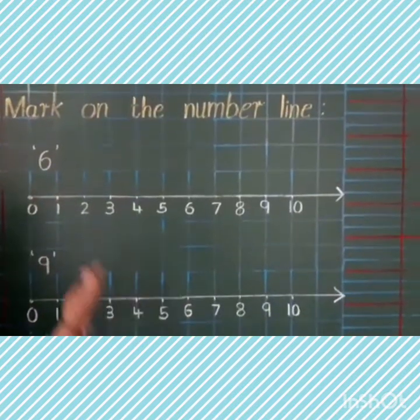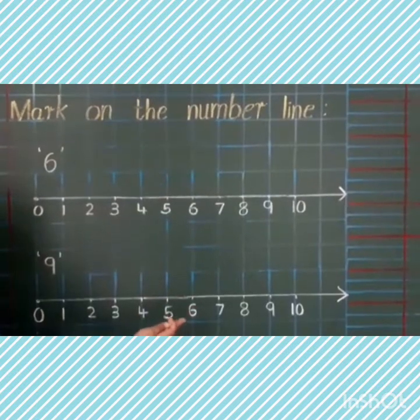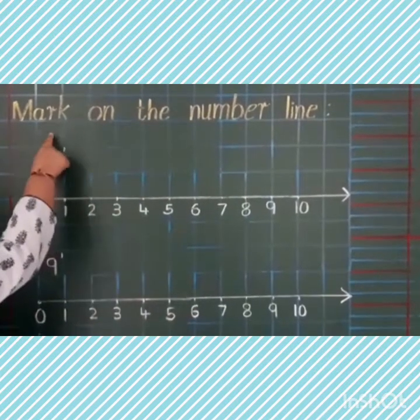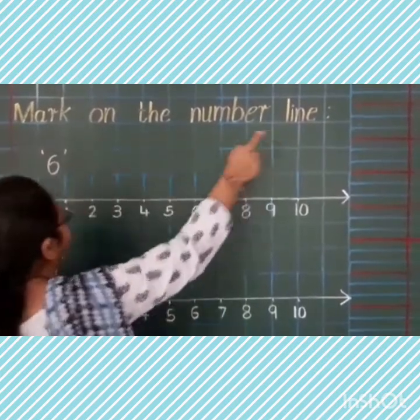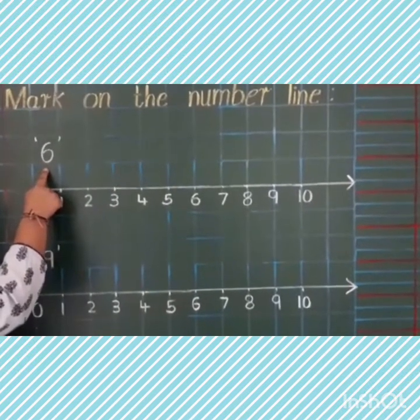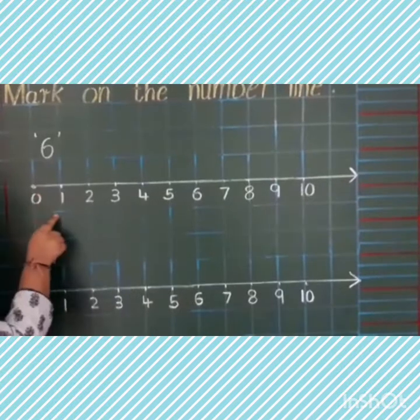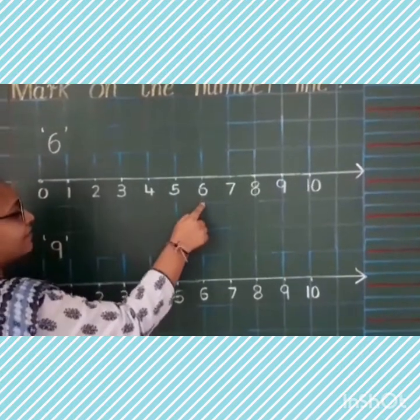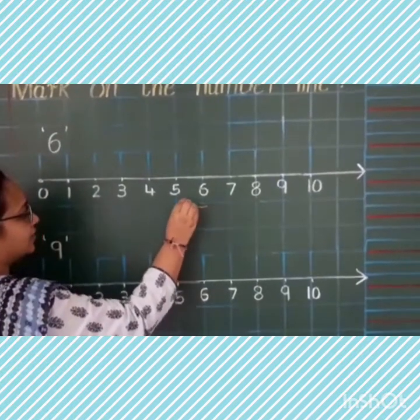Kids, in LKG class, you have already learnt this. So, let us revise. Mark on the number line. Which number is this? Six. Now, let us find out where is six on the number line. Here. Now, we are going to encircle it.